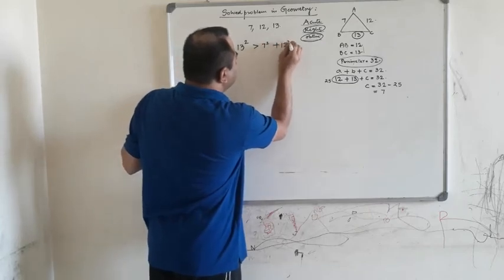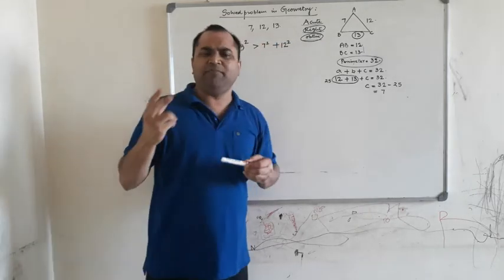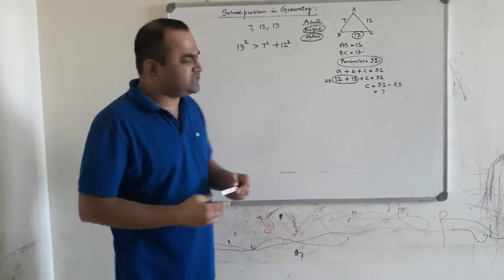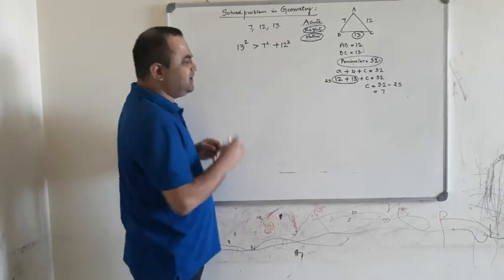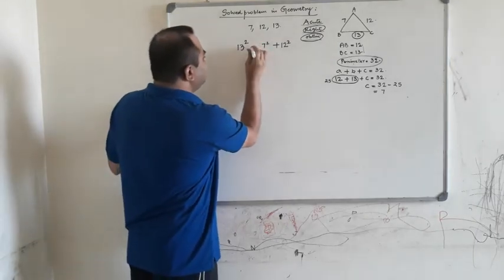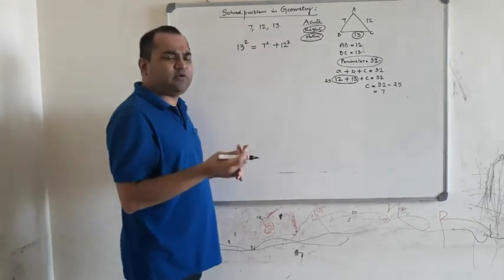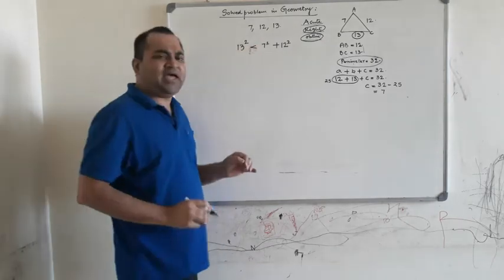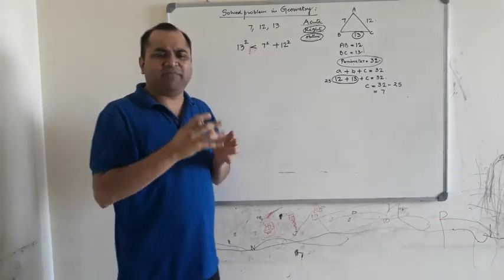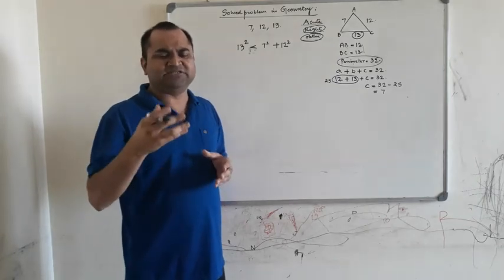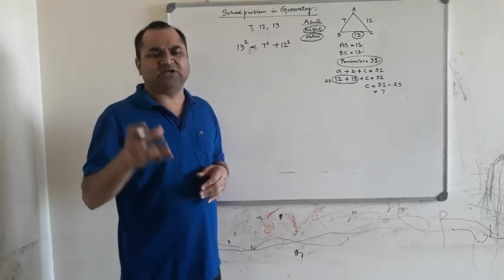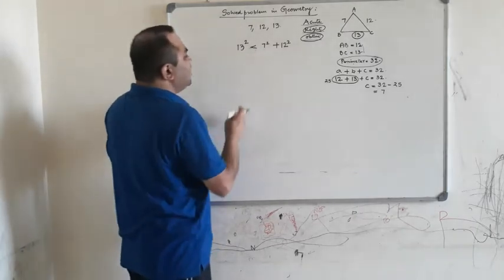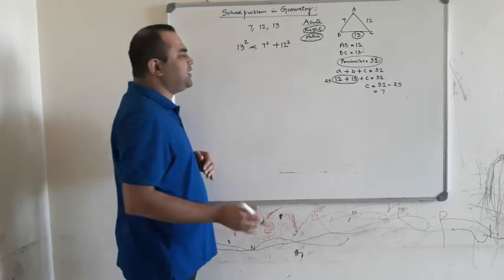We check whether the square of the biggest number is greater than, equal to, or less than the sum of the squares of the other two numbers representing the lengths of the other two sides. You can verify whether it is equal, or explore whether it is less than — that is, whether the square of 13 is less than the sum of the squares of the other two numbers.